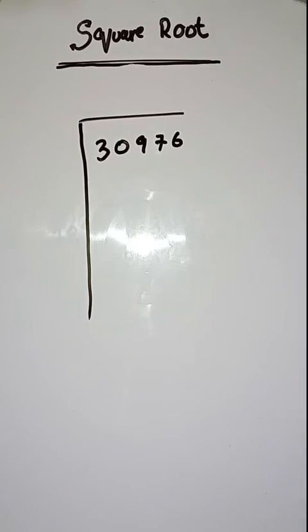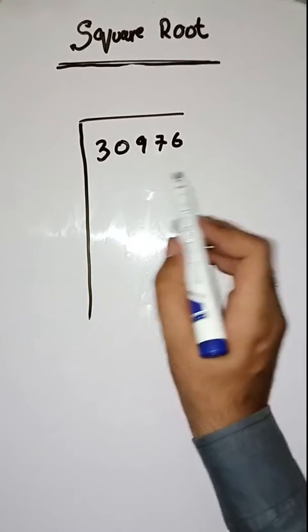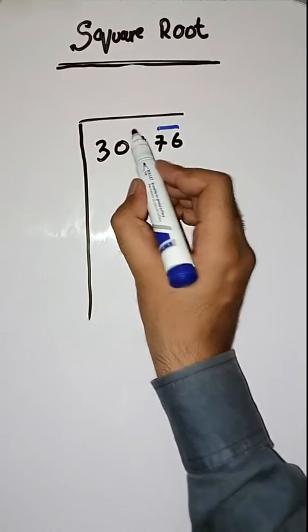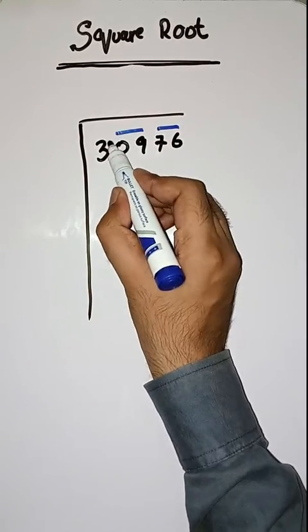So first step is, we have to make pairs from right to left like this. First pair, then second pair, and three as it is.